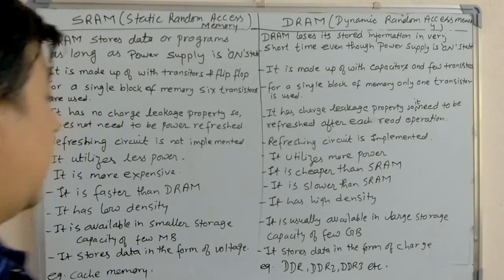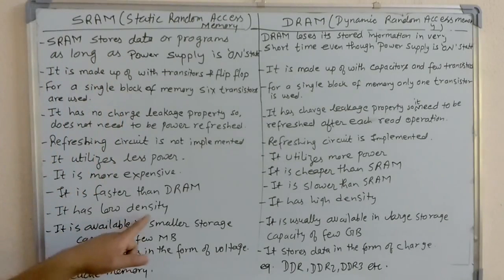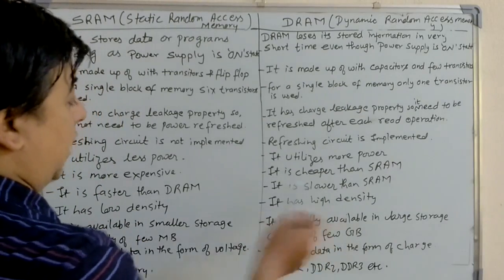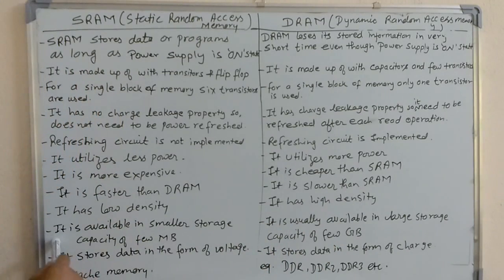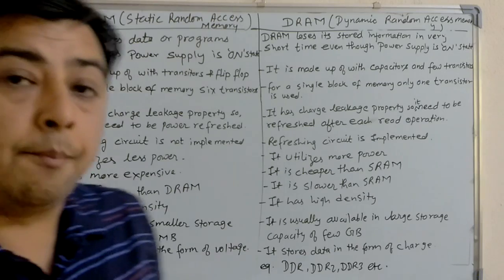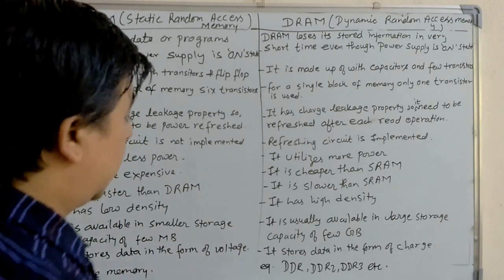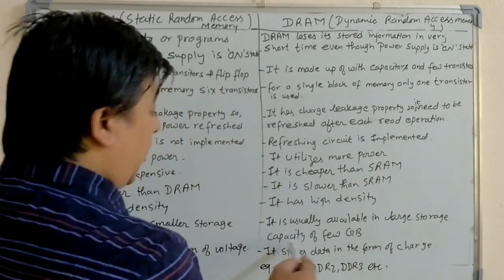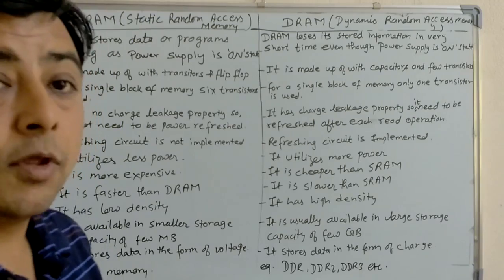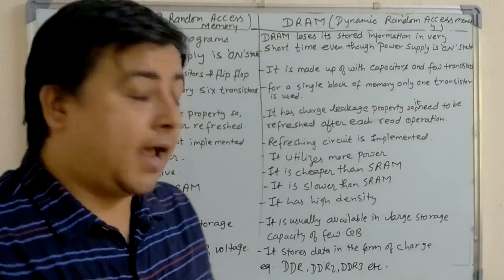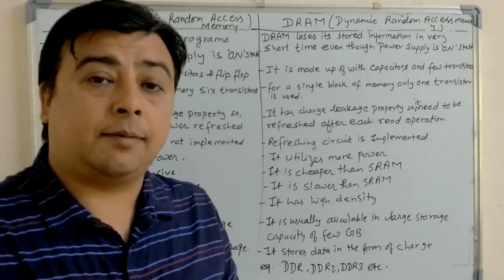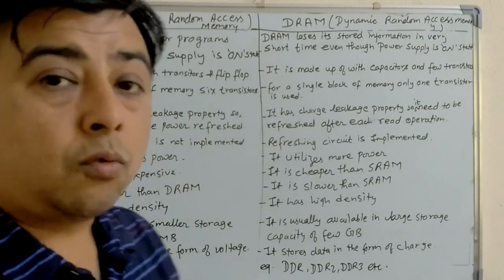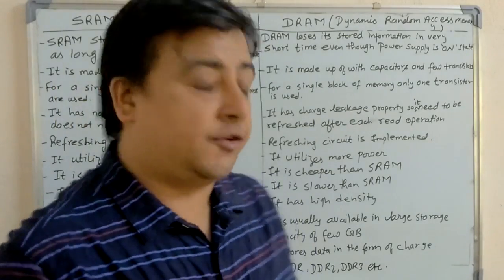SRAM has low density, but DRAM has high density. SRAM is available in smaller storage capacity of a few MB, but DRAM is usually available in large storage capacity of a few GB — such as 1 GB, 2 GB, 4 GB, or 8 GB.